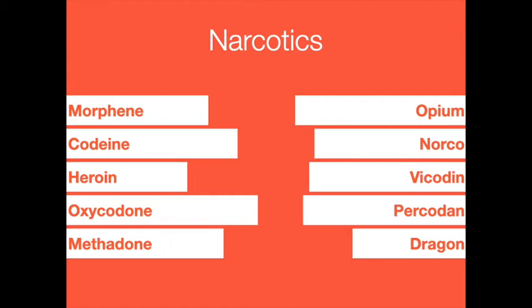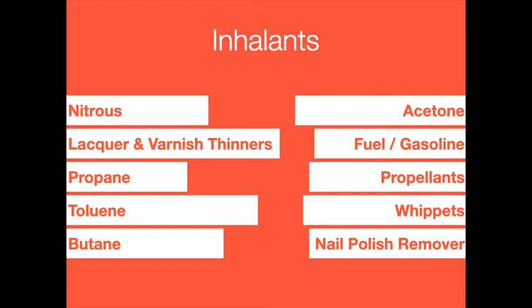Substances inhaled to produce mood-altering effects are called inhalants. Inhalants also depress the central nervous system and can cause damage to the heart, lungs, brain, and liver. They include medical anesthetics such as amyl nitrate and nitrous oxide (also known as laughing gas), as well as hydrocarbons known as solvents. The effects of solvents are similar to those of alcohol. Other effects of inhalant use include swollen mucous membranes in the nose and mouth, hallucinations, erratic blood pressure and pulse, and seizures. Solvents include toluene found in glues, butane in lighter fluids, acetone in nail polish removers, fuels such as gasoline and kerosene, and propellants in aerosol sprays.